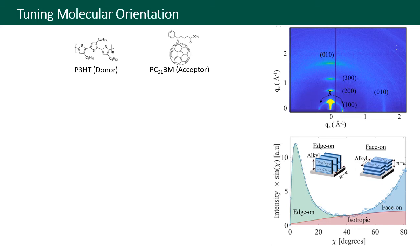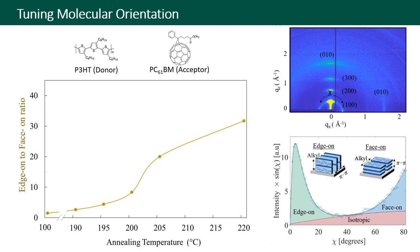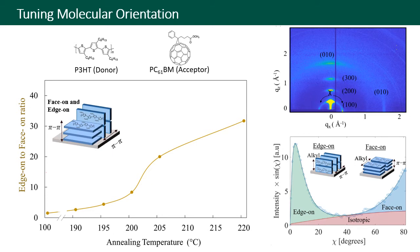To test this, we performed a set of experiments with the well-studied P3HT:PCBM system where we systematically varied the molecular orientation of the polymer donor P3HT. Based on grazing incidence X-ray diffraction measurements performed at Brookhaven's NSLS2 synchrotron, we determined the proportion of edge-on and face-on populations as the annealing temperature of the bulk heterojunction was varied. As the annealing temperature increased, the edge-on stacking population increased relative to the face-on population, going from a nearly one-to-one ratio at lower temperatures to an edge-on population about 30 times higher than face-on at higher annealing temperatures.